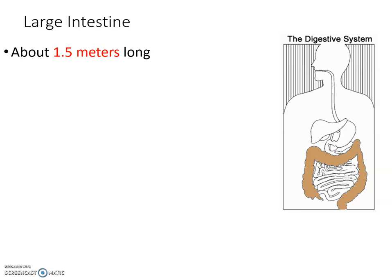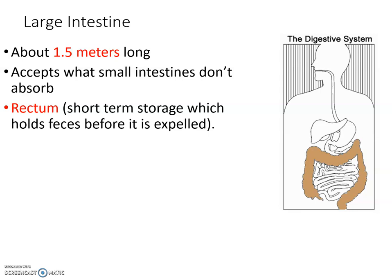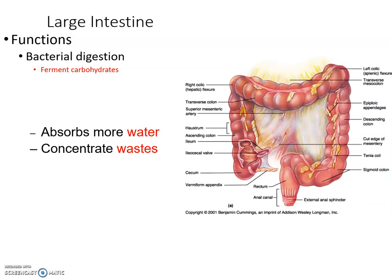The large intestine is four to five feet long. By this point, most of the good stuff has already been absorbed. The large intestine absorbs some remaining nutrients the small intestine missed, but its main job is to extract water and concentrate the waste, forming a bowel. It also has bacteria that assist this process. When we release a bowel movement, it's in solid form because the water has been removed; diarrhea is an instance where that water removal doesn't happen properly.